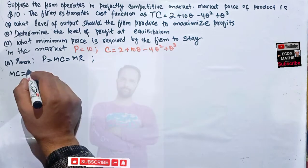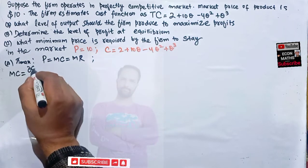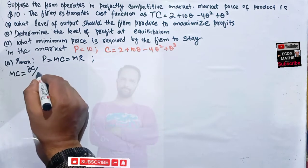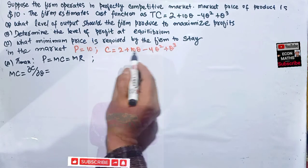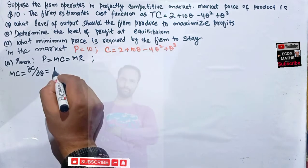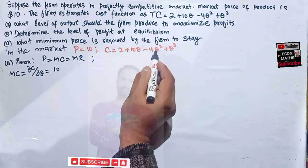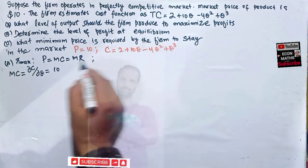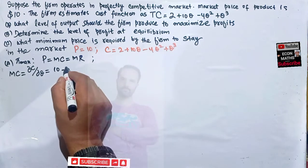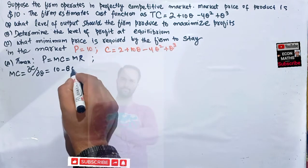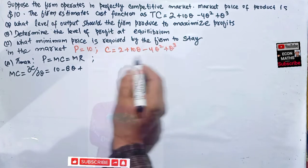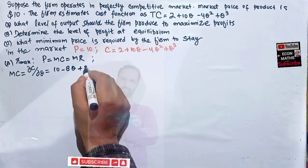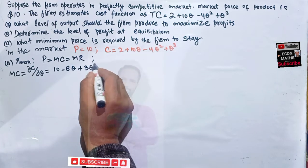So marginal cost is the derivative of C with respect to Q. The derivative of the constant is 0, derivative of Q is 1 giving us 10, derivative of Q squared is 2Q so 4 times 2Q gives minus 8Q, and derivative of Q cubed is 3Q squared.